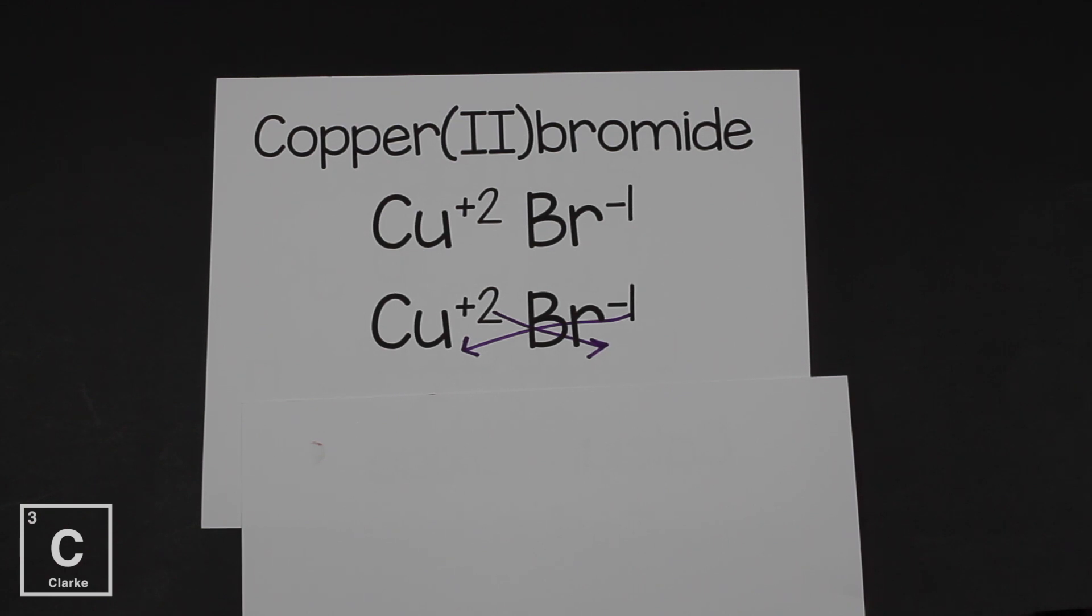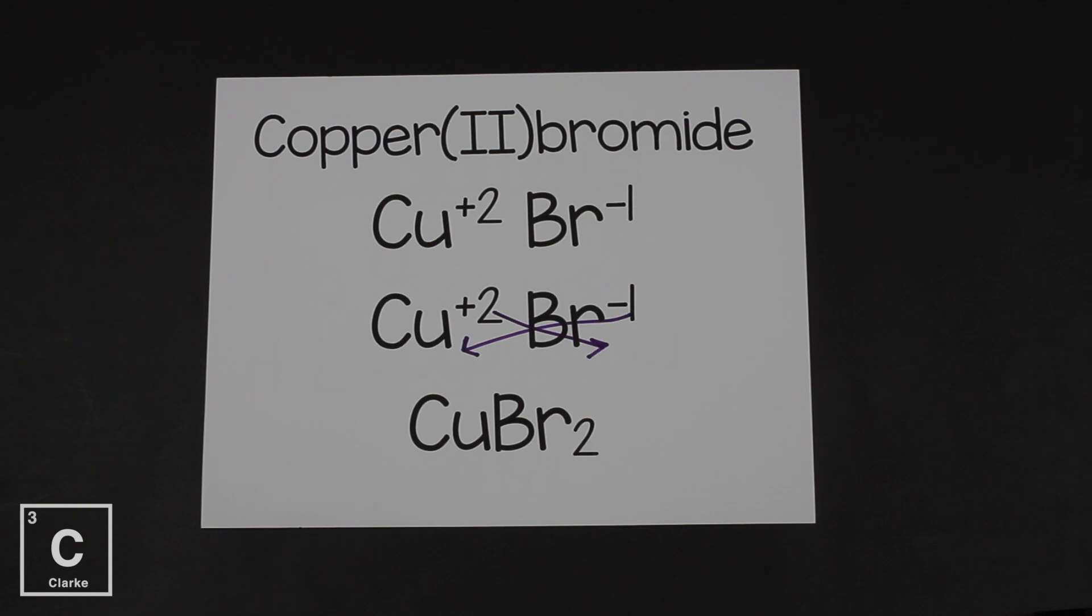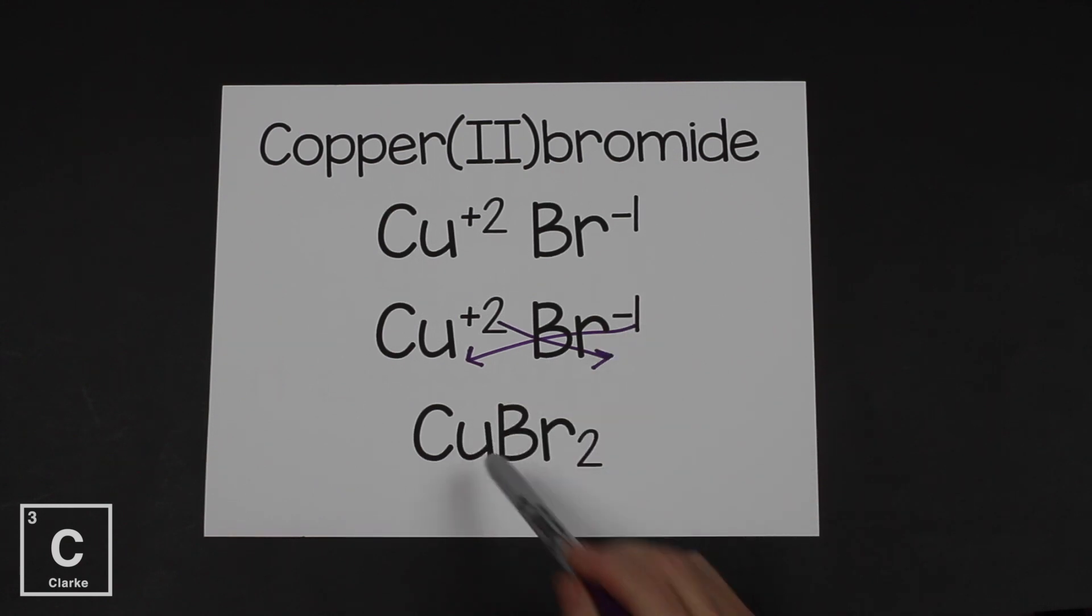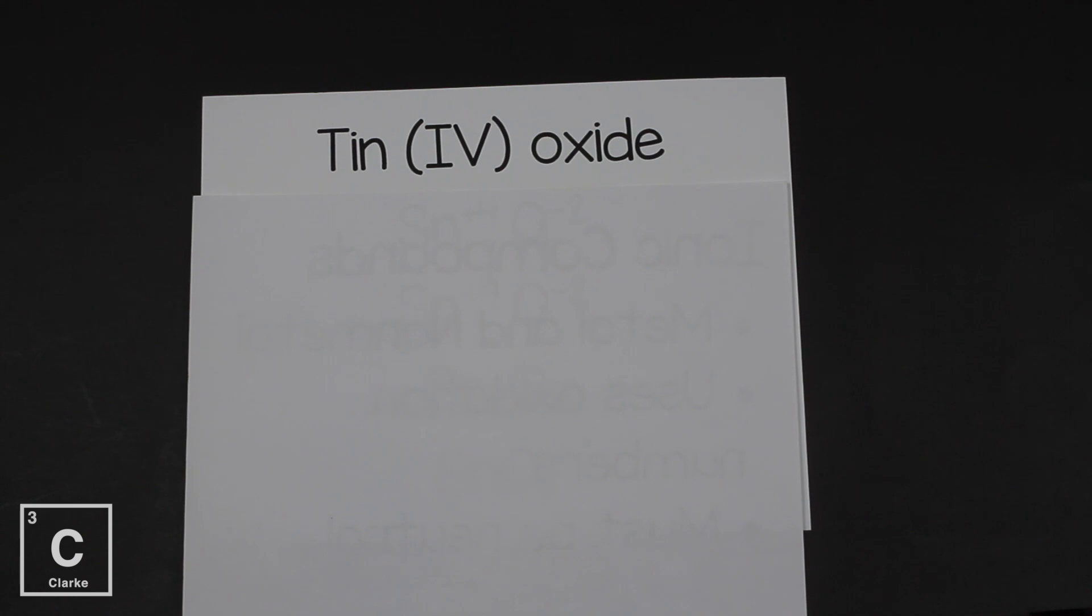Now I don't know if we've said this before, but in chemistry, most of the time, ones are understood. So we're not going to crisscross down the one. We're only going to crisscross down the two. So that's going to leave us CuBr2. The two cross down and the one is understood. So anytime you have an element with no number, that is always an understood one.